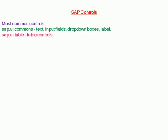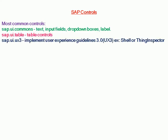Most common controls: sap.ui.commons consists of text, input fields, dropdown boxes, label, etc. sap.ui.table contains table controls. And sap.ui.ux3 implements user experience guidelines, for example shell or thing inspector.